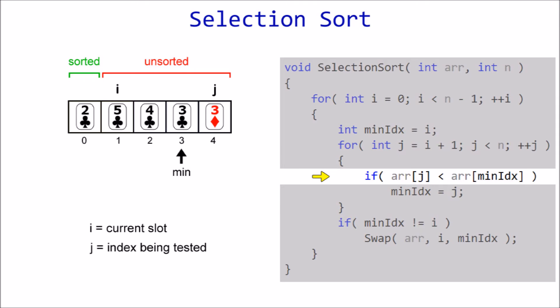Is three less than three? No, so the three of clubs remains as our minimum. It's not already in the current slot, so it's swapped with five and now part of the sorted section.